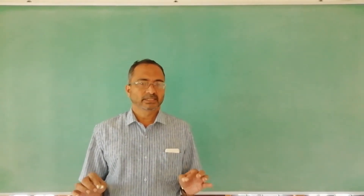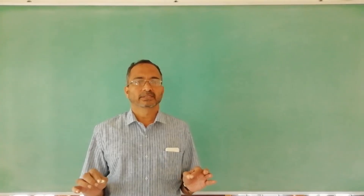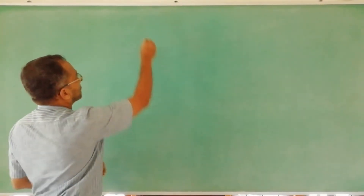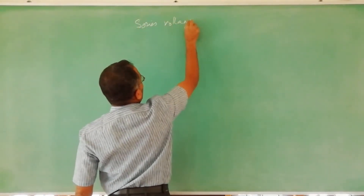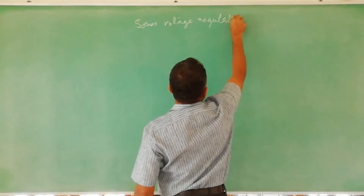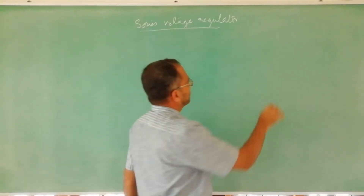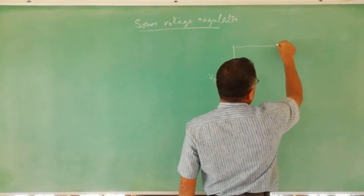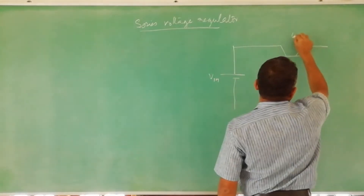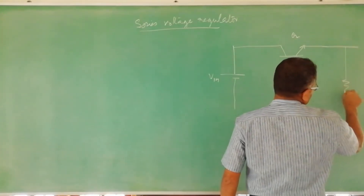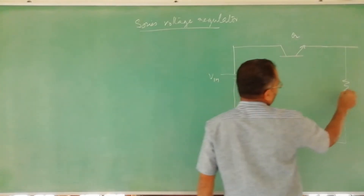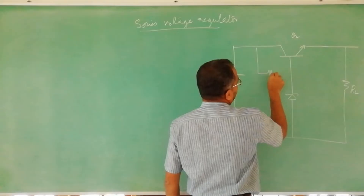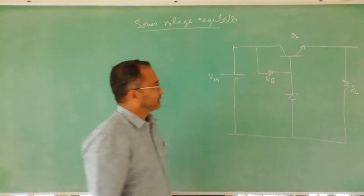Today in this session we shall learn the design and setup of a series voltage regulator without feedback. The circuit diagram shows input voltage Vin, a series element transistor Q, output resistance RL, a general diode, and a resistance called RB. This is the basic circuit.